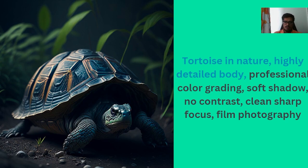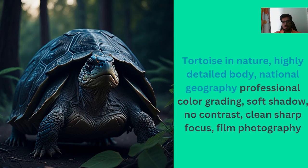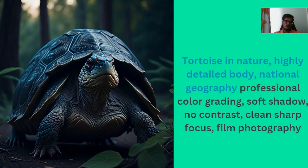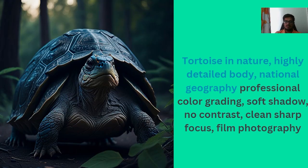Now let's move on to a more nature-based generation — a tortoise. The prompt is 'tortoise in nature, highly detailed body, professional color grading, soft shadow, no contrast, clean sharp focus, film photography.' The generation looks super real, with the focus on the subject in a nature-oriented style. Changing the photography style to National Geographic, the focus shifts more to telling the story of the subject — though I can see some misalignment with the tortoise shell here.